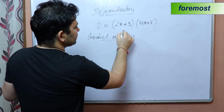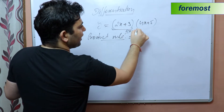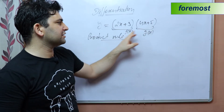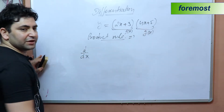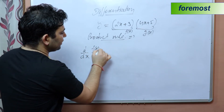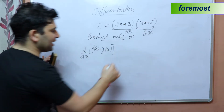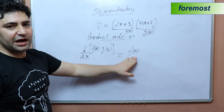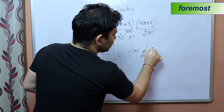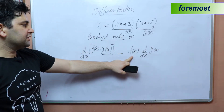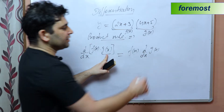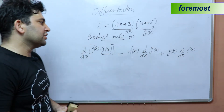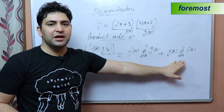Let us suppose the first function is f(x) and the second function is g(x). According to the product rule of differentiation, the derivative of f(x) times g(x) equals: first function f(x) as it is, multiplied by the differentiation of the second function g(x), plus g(x) as it is, multiplied by the differentiation of first function f(x). This is the complete product rule.